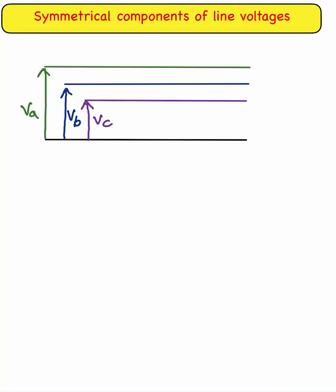Hello friends, welcome to my YouTube channel Basic Electrical. Today we have learned about the symmetrical components of line voltages. As you can see in the figure, there are three line voltages: Va, Vb, and Vc. Between them that is Vab — the phase difference between voltage A and B — and similarly Vbc and Vca.